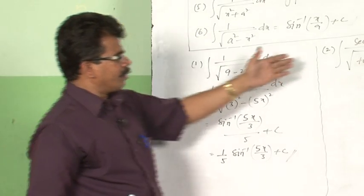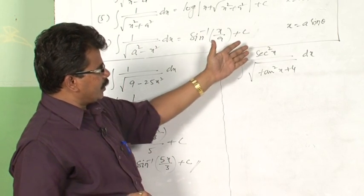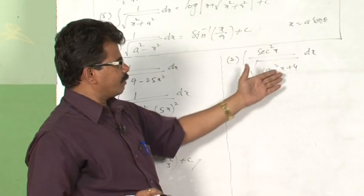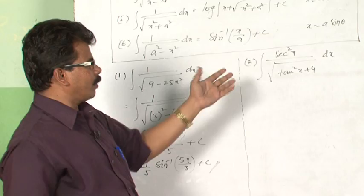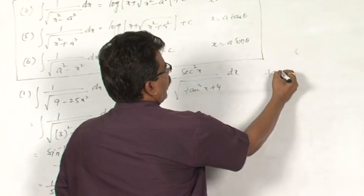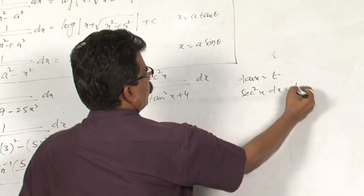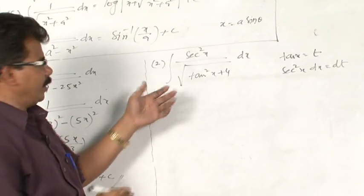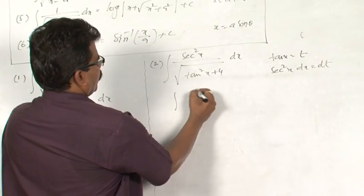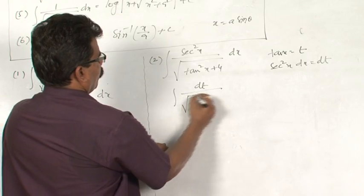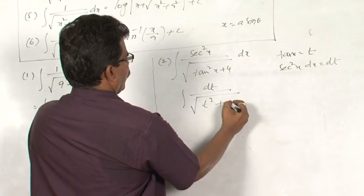Sometimes, instead of polynomial functions, there may be trigonometric functions and we take substitution. For example, in this question we have integral secant square x divided by root of tan square x plus 4. The suitable substitution is tan x equal to t, and the derivative of tan x is secant square x dx equal to dt. We use this substitution: integral secant square x dx becomes dt, and tan square x plus 4 can be written as t square plus 2 square.